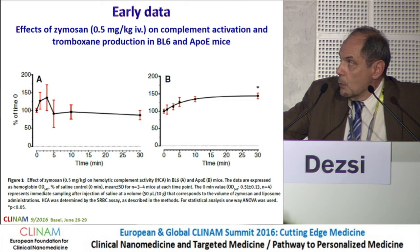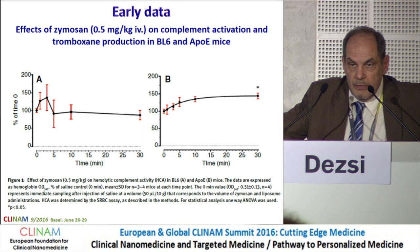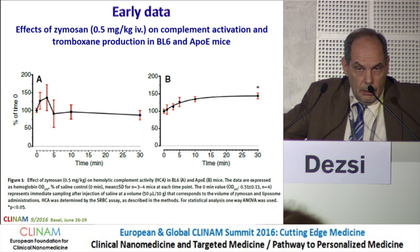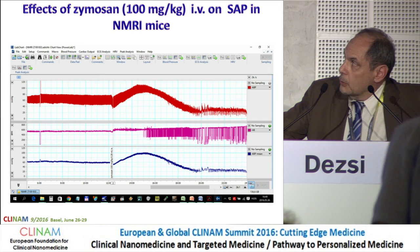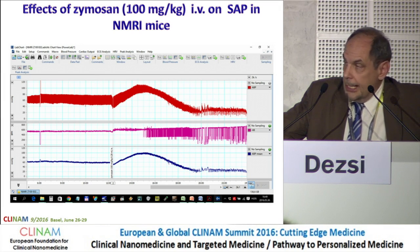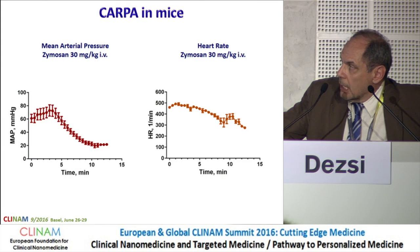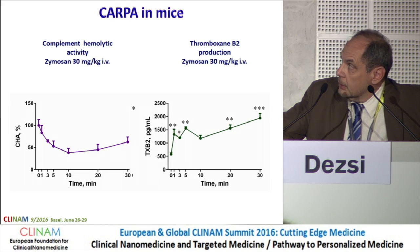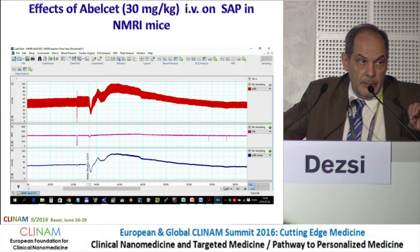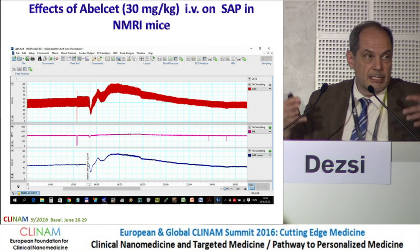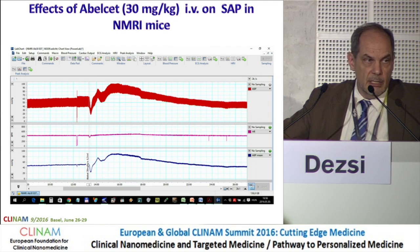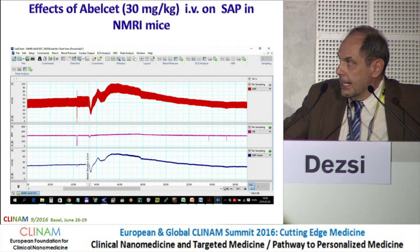Regarding our mouse CARPA model, we initially saw an opposite response and did not see complement consumption. But we started with very low doses. When we elevated the dose to 100 mg/kg, we saw a huge elevation in systemic arterial pressure in mice. We repeated the same experiment with Abelcet. One specific finding with Abelcet is that, in contrast to zymosan — which showed elevation then decline in systemic arterial pressure — Abelcet showed only an increase with no decline. Detailed data can be seen on a poster outside by Dr. Earthy.